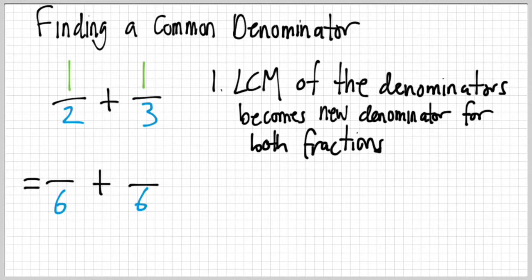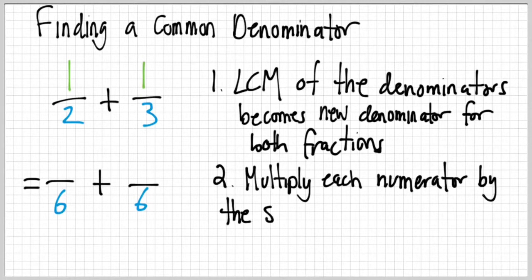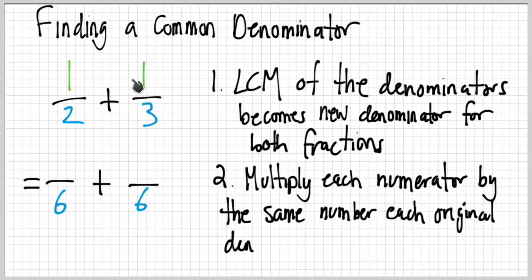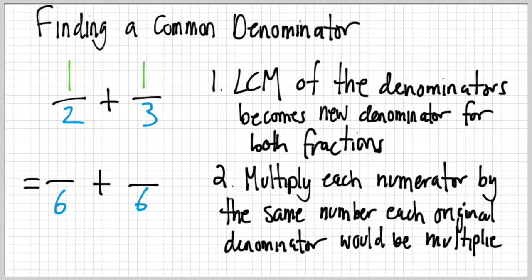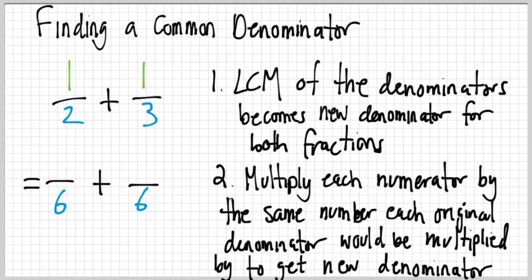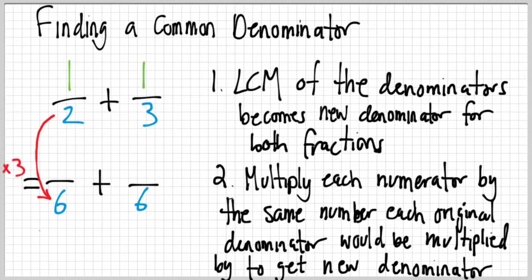We've got two and three — what's the lowest common multiple of two and three? That would be six. So six is our new denominator. Next, we need to multiply each numerator by the same number that each original denominator would be multiplied by to get the new denominator. So for the two: two times three is six, so we multiply the numerator one by three — giving us three.